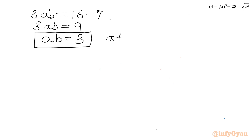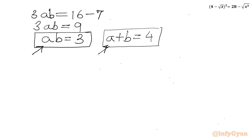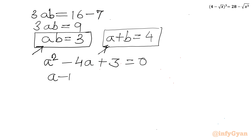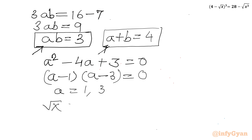So a + b = 4 and ab = 3. I frame a quadratic equation whose roots are a and b: a² - (sum of roots)·a + (product of roots) = 0, giving a² - 4a + 3 = 0. Factoring: (a - 1)(a - 3) = 0, so a = 1 or a = 3. Since a = √x, squaring gives x = 1 and x = 9.